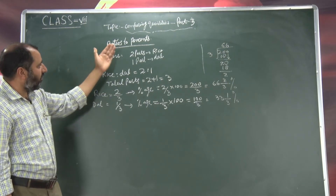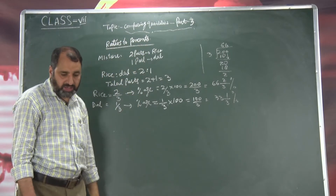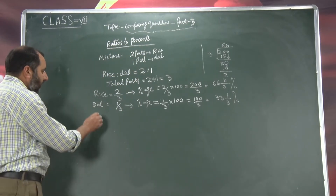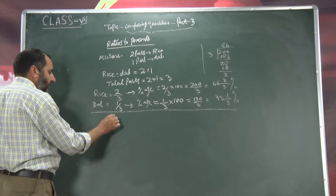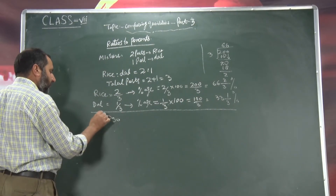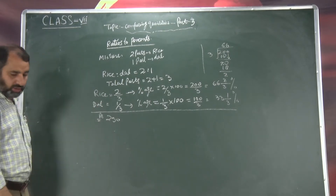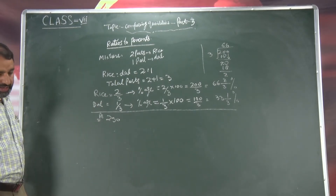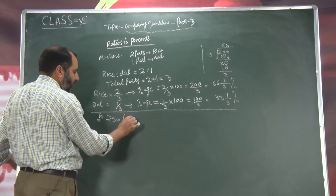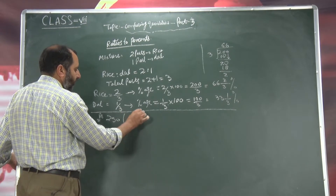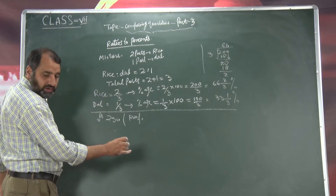So it means, how we can convert the ratios to percent. Yaa is tarikay se — agar hamare paas two hundred fifty rupees hai. To two hundred fifty rupees mein, hum divide karthi hai — ek ka naam hai Roof, doosra ka naam hai Rais, Rahman.